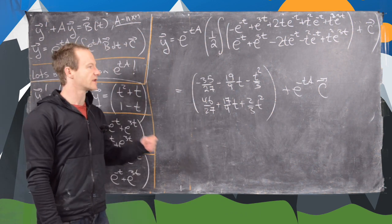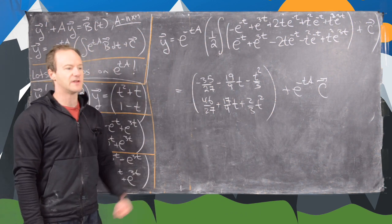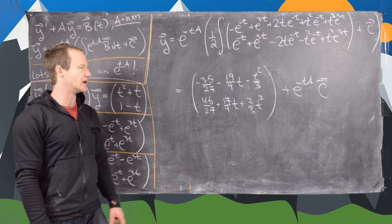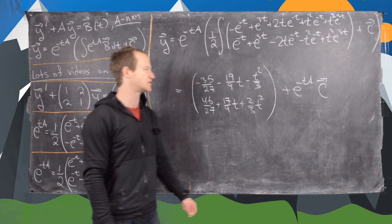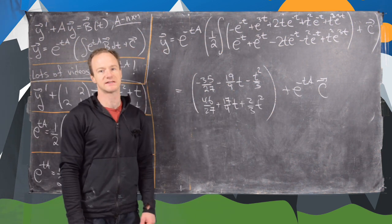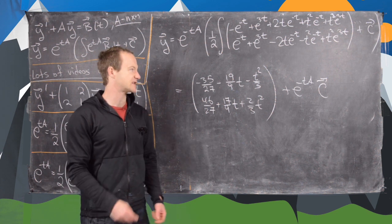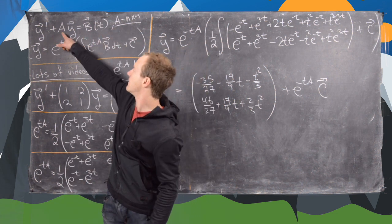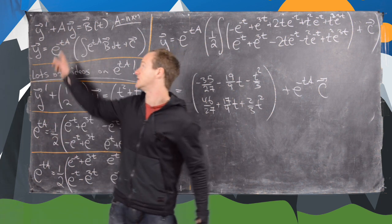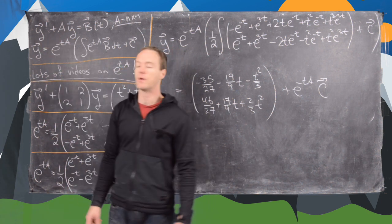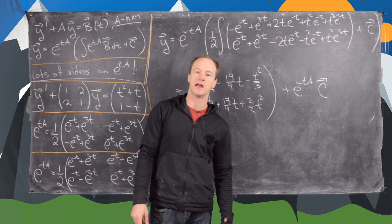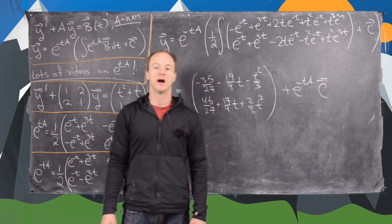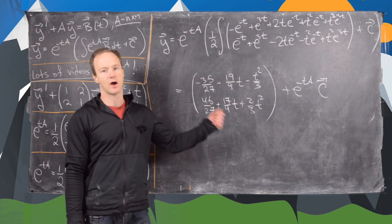This may look a little different than another video I did on non-homogeneous systems because e to the tA has been switched with e to the minus tA. But they're playing the same roles — in this case, I've moved matrix A to the same side of the equation as y prime to make it look like our formula for a single differential equation. That's the end of this video.